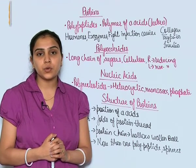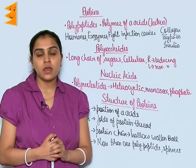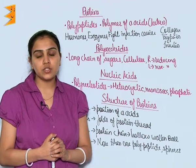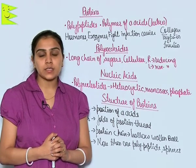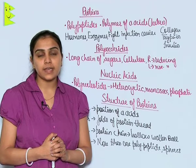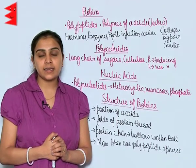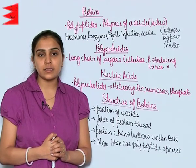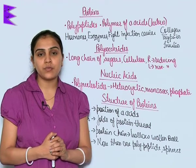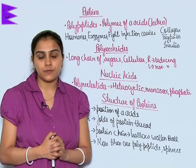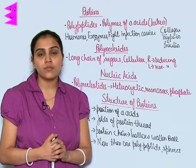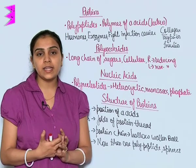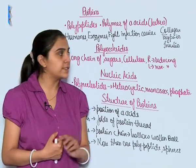Different types of proteins are collagen, trypsin, insulin, etc. Proteins act as hormones, enzymes, as a carrier for certain molecules, and they also help to fight against infection. They are also the structural unit of the human body or any living organism.